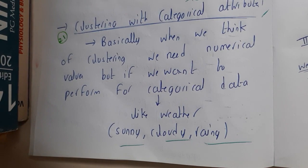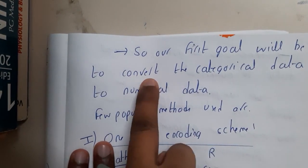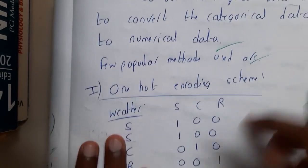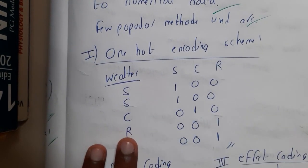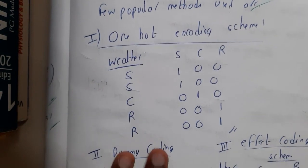That is the reason why we follow some coding methods. Our first goal will be to convert these categorical attributes into numerical values before using them. Few of the popular methods which we are going to see today are one hot encoding scheme.